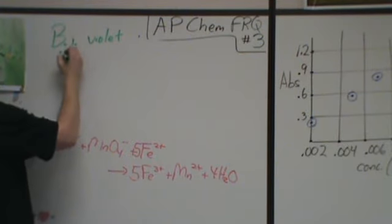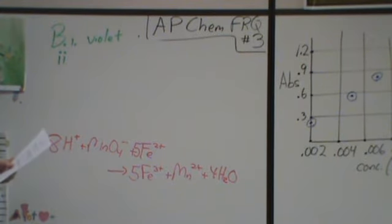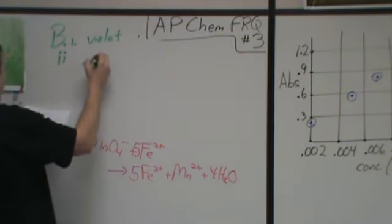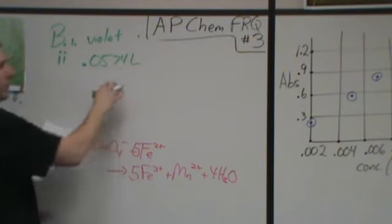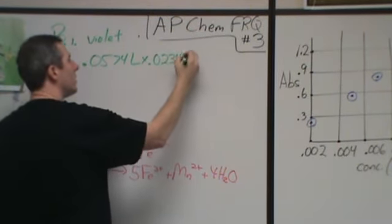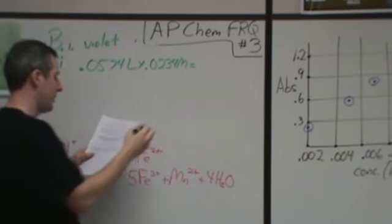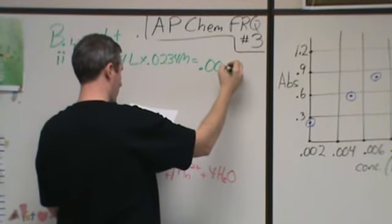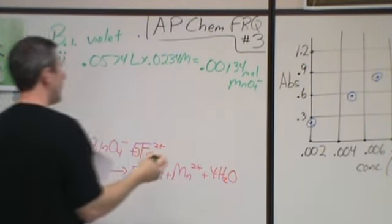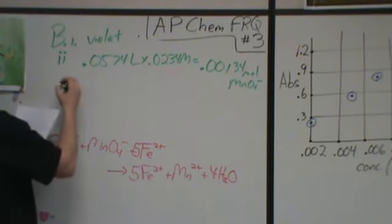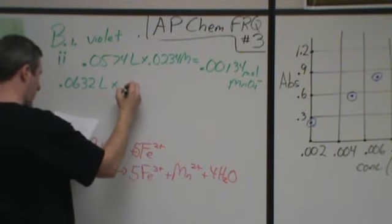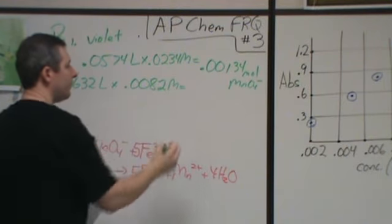So then part two starts to get into the numbers. Now at the beginning it told you a set of numbers, then in part two it gives you a new set of numbers. So if I take both of those sets, the very beginning of the problem told me I had 57.4 milliliters, which is this many liters, and I had 0.0234 molar solution. When you multiply molarity times liters, it gives you moles. So this tells me that I had 0.00134 moles of this permanganate.